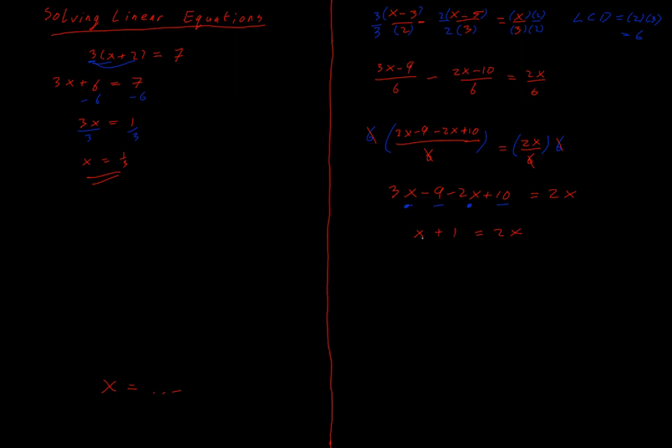Now I want to rearrange this and in this case it's easier to get the x's on the right hand side. So I'm going to subtract x here so I get zero x's on the left. I end up with 1 is equal to x. And that's my final answer.